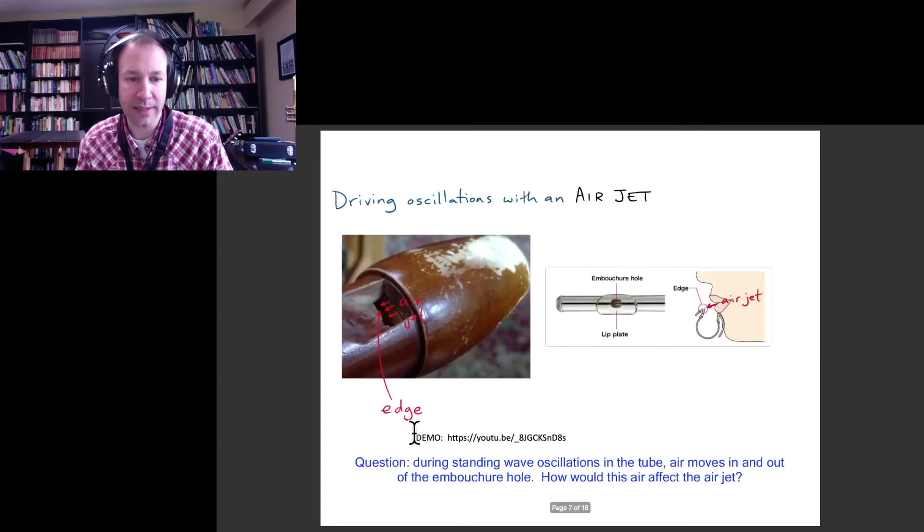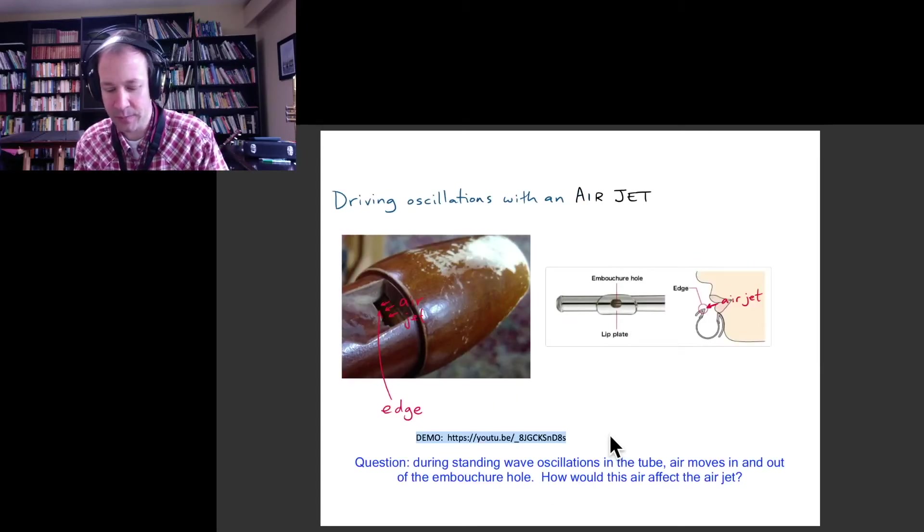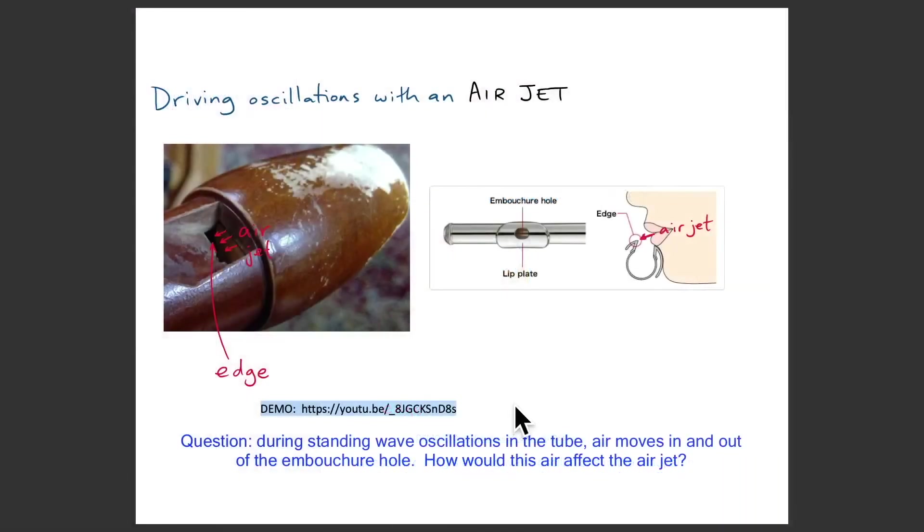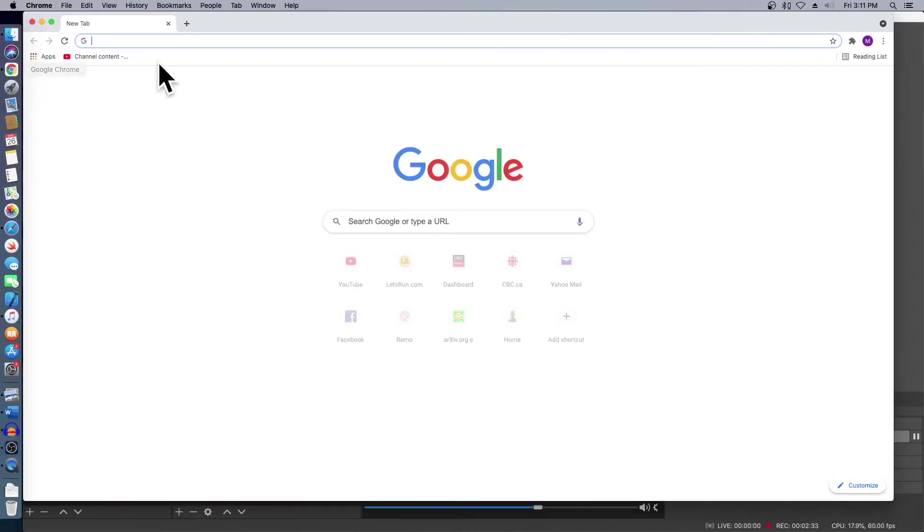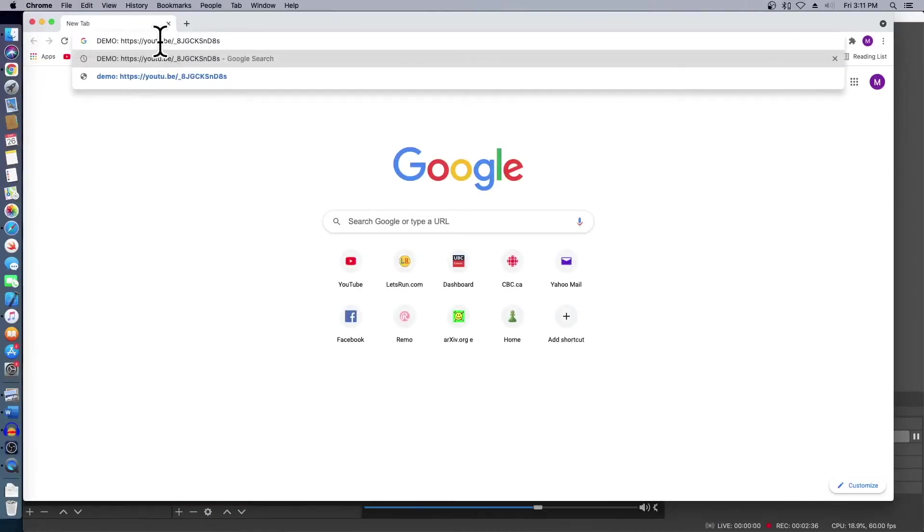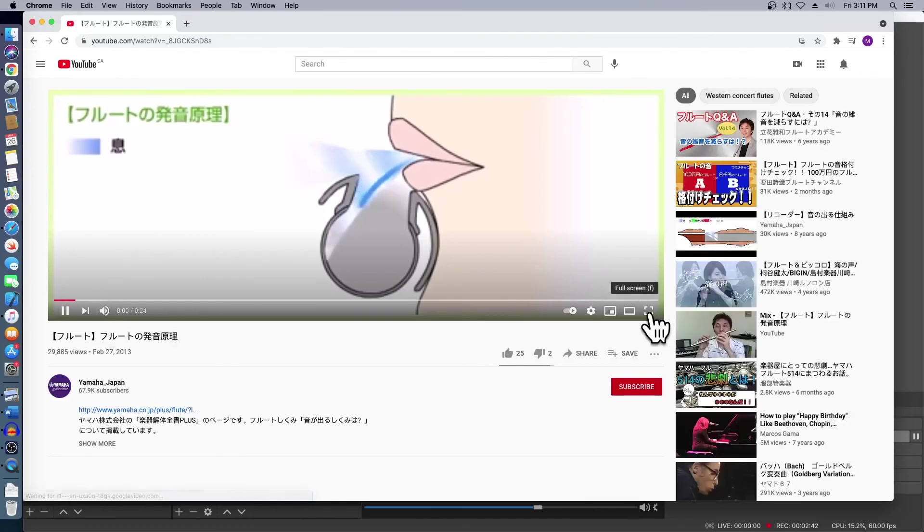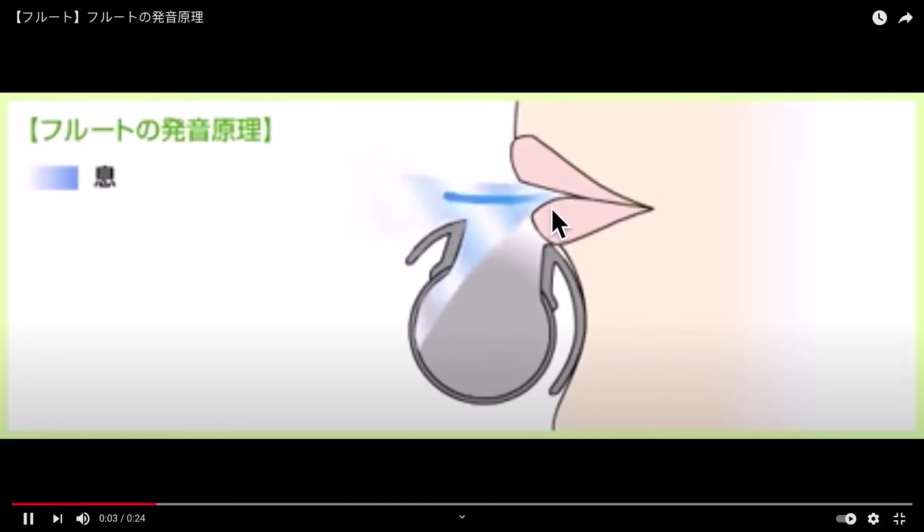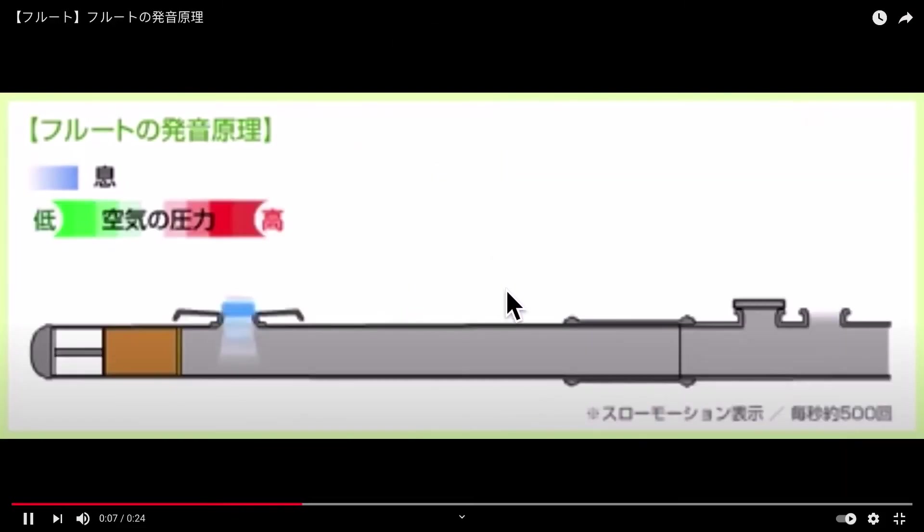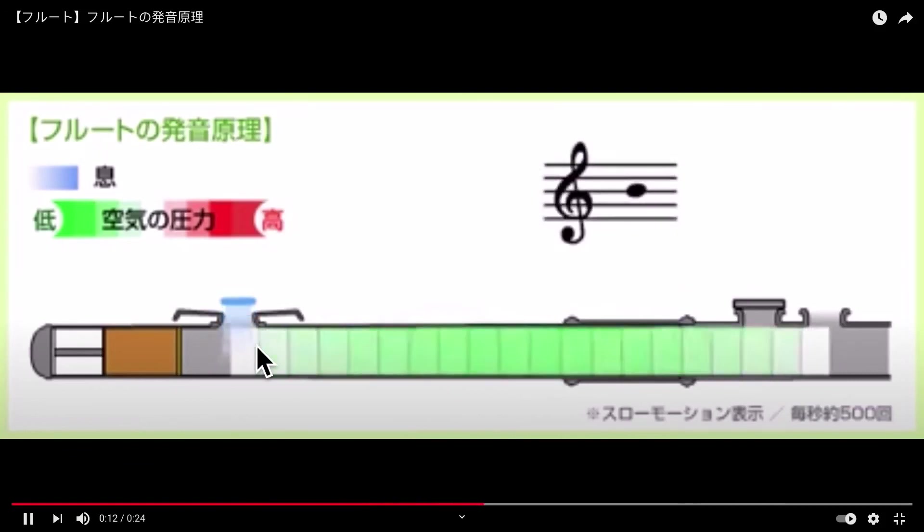So I'll just show you a quick demonstration of that. So the Yamaha corporation who make a lot of flutes made a little video to help us understand this. Okay, so you can see the blue is the air jet by the player, and it's oscillating up and down, and this is in response, as we'll see, to this motion of air inside the tube already.